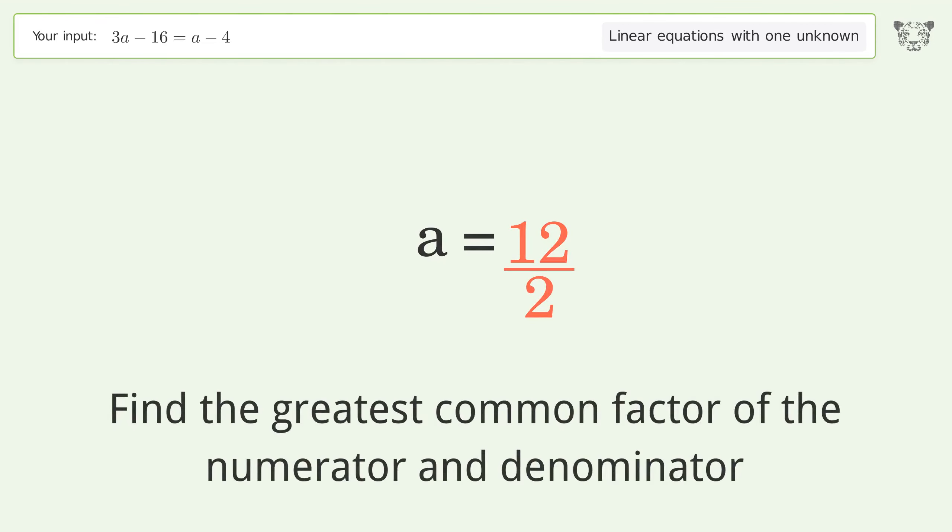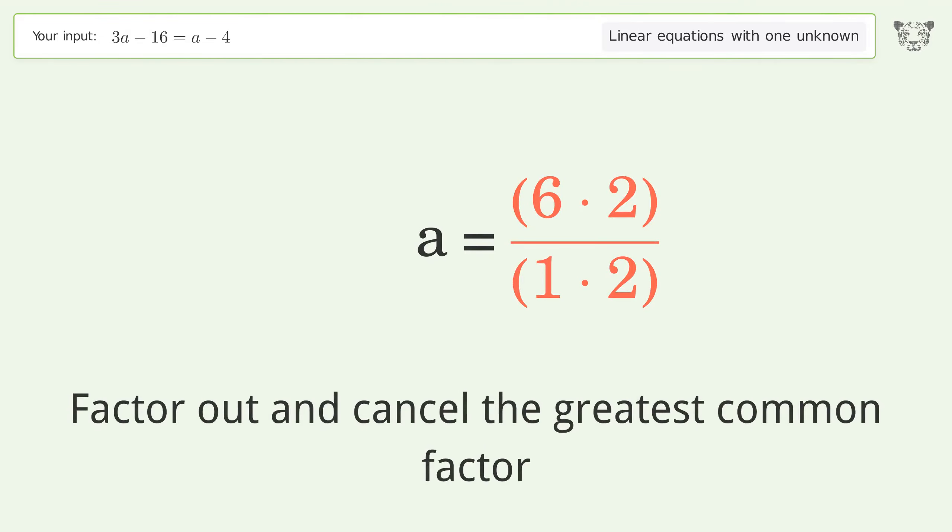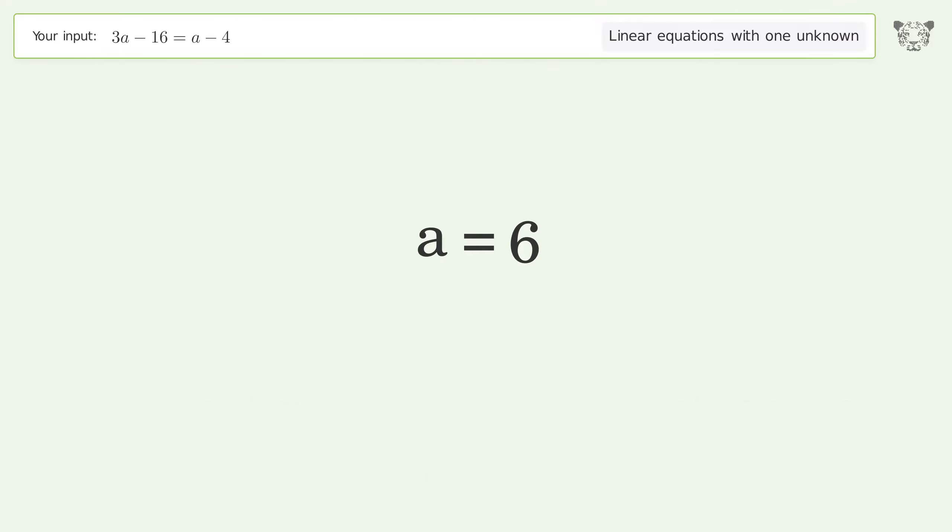Find the greatest common factor of the numerator and denominator. Factor out and cancel the greatest common factor. And so the final result is a equals 6.